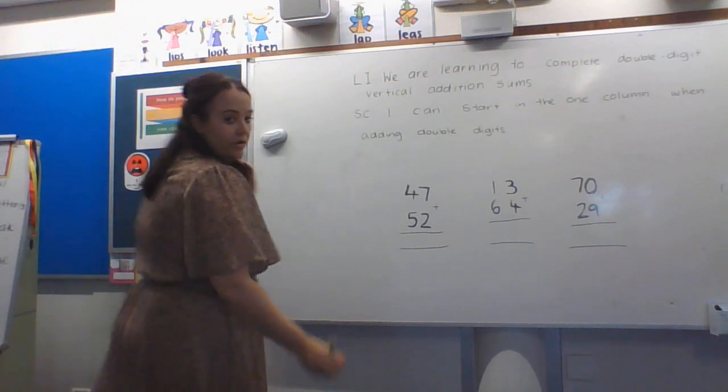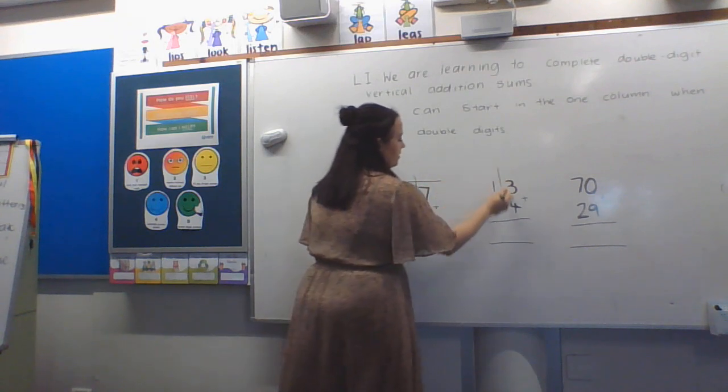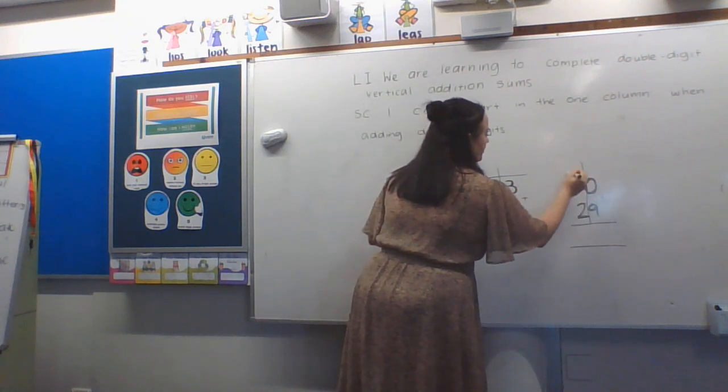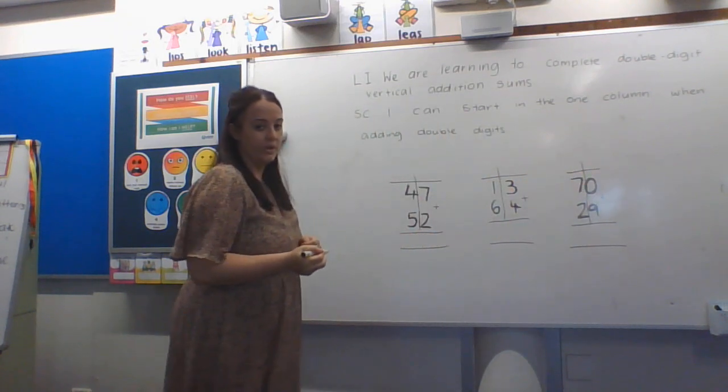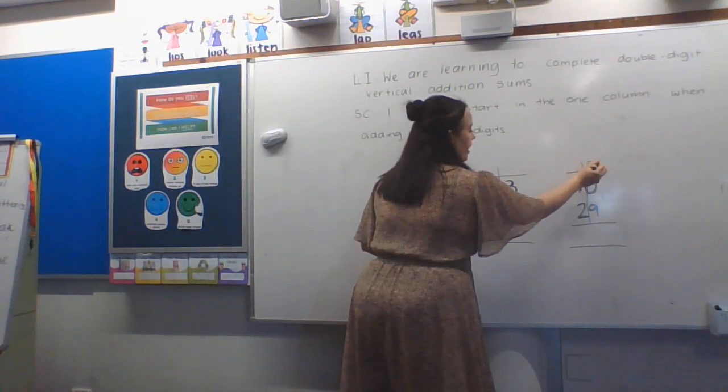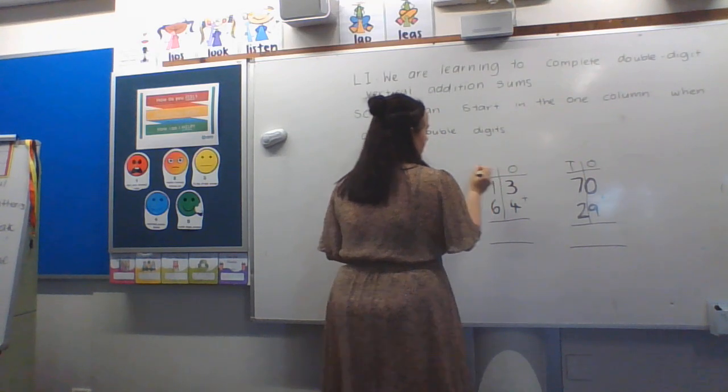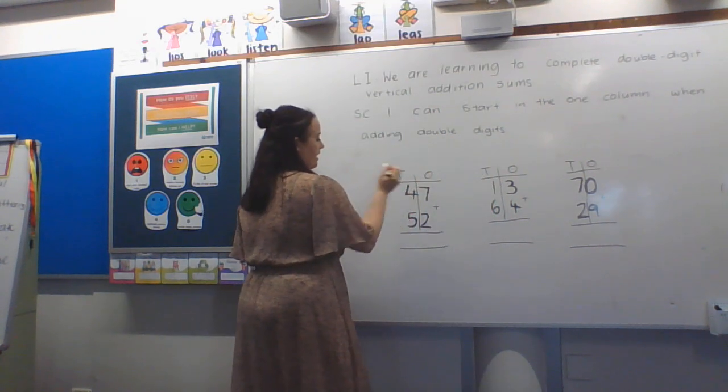So first we need to work out where our ones column is. We know our ones is always the last place in a number. So our ones, our tens, our ones, our tens, our ones, our tens.